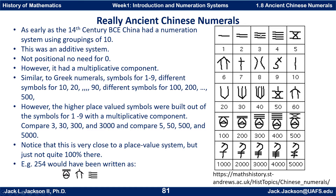Let's take a column and compare. These are pretty self-explanatory: a line for one, two marks for two, three marks for three, four for four. A kind of X-looking shape for five. Six looks kind of like this. Seven, eight, and then the shape for nine. Ten was a vertical line.